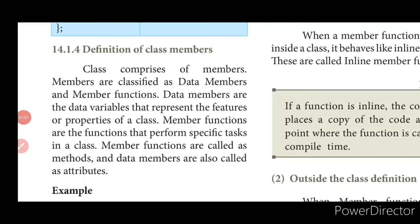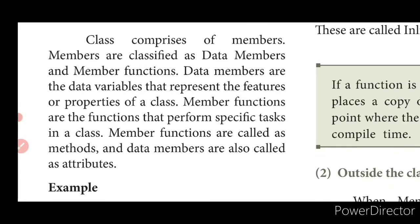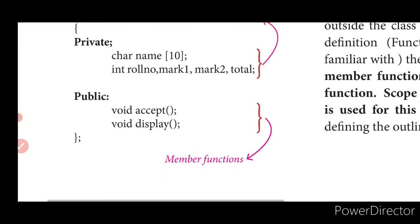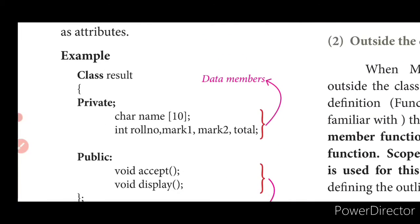The class comprises members classified as data members and member functions. Data members are the data variables that represent the features and properties of the class. Member functions are functions that perform specific tasks in a class — they can otherwise be called methods. Data members can otherwise be called attributes. For example, in class 'result', the variables name, role number, mark one, mark two are data members, and accept and display are member functions.